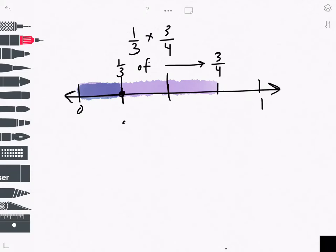So this number line is segmented into fourths, and this spot is 1 fourth. I can do my computation here, 3 times 1 is 3, 3 times 4 is 12, and I can simplify by dividing by 3 to get 1 fourth.